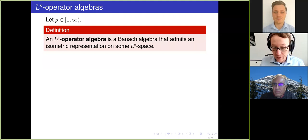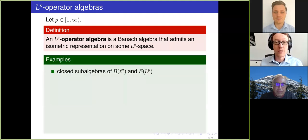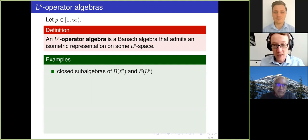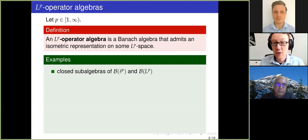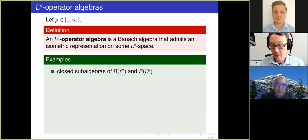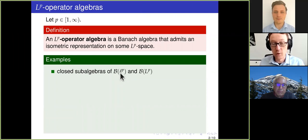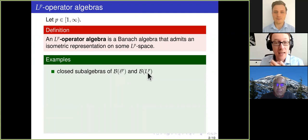What are the examples of these Banach algebras that we want to look at? The typical examples — and somehow all the examples are — the closed sub-algebras of the algebra of bounded operators on some LP space. We can consider the space little LP, but we also allow the space big LP and all other kinds of LP spaces on other measure spaces.